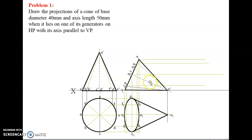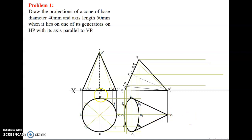This is our front view. Now we are going to draw the top view. Project lines downward from all the points — from E, draw a straight line; from D dash F dash, draw a straight line; from C and G, draw a straight line; from B and H, draw a straight line; from A dash, draw a straight line; from O dash, draw a straight line. From all these points, draw straight projecting lines downward.